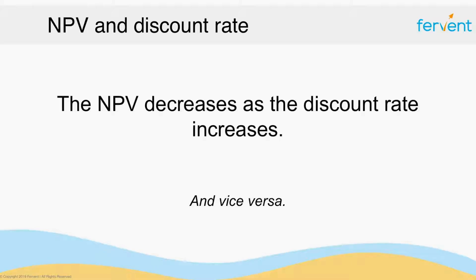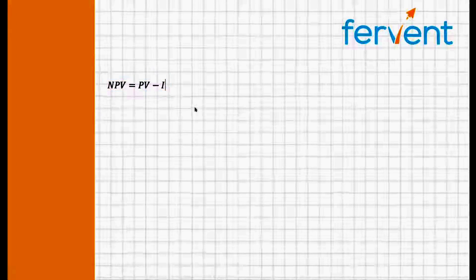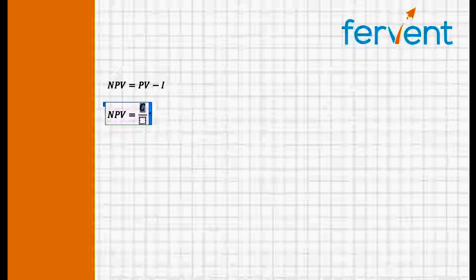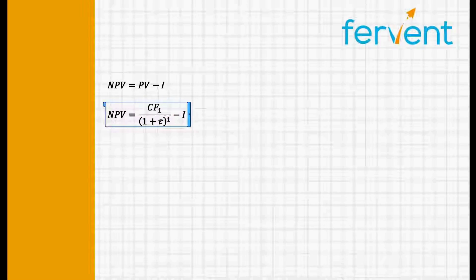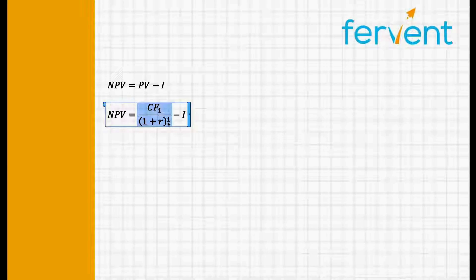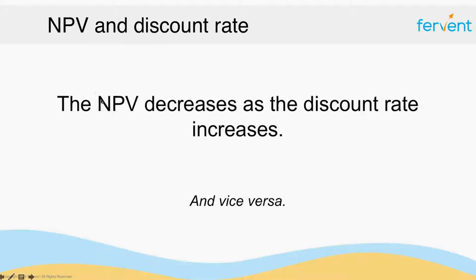Although we didn't explicitly mention it in the NPV video, you would have seen that the relationship is quite clear. If you think back to the equation for NPV — NPV equals PV minus I — taking the most simple case with a single cash flow: you take that cash flow at time one divided by one plus r to the power of one, then subtract the investment. So r is the discount rate. If this increases, you've got a bigger denominator and therefore the fraction decreases. Likewise, if the discount rate decreases, you've got a smaller denominator and the fraction increases. So PV and the discount rate have an inverse relationship, and therefore the NPV and the discount rate have an inverse relationship as well.